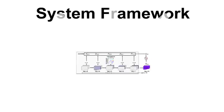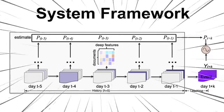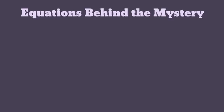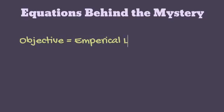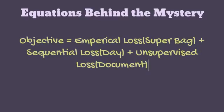This is an overview of our proposed framework. We show groups of news articles each day, and we have multiple days prior to the specific protest event that we want to forecast. The major equation behind the model is a loss function that combines different components including bag-level, day-level, and document-level terms that we want to optimize with respect to the model parameters.